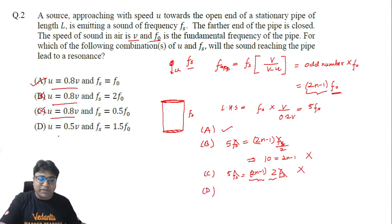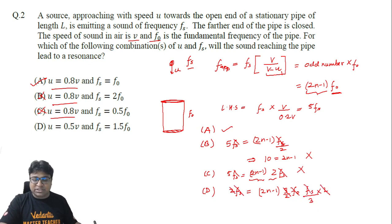Now we are going to check for option D. When we are checking for option D, u is given to be 0.5v, so we have to calculate the left side again. If u equals 0.5v, then in the denominator we will have 0.5v, then v divided by 0.5v will become 2, so it becomes 2fs equals on the right hand side (2n-1) times f_naught. F_naught is fs divided by 1.5, which is 3/2. So this 2 and this 2 gets cancelled, fs gets cancelled, so (2n-1) becomes equal to 3, which is an odd number. So option D is satisfied.